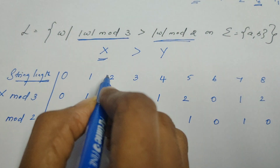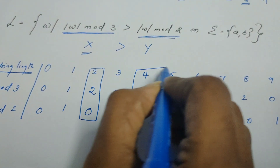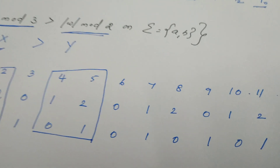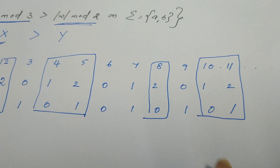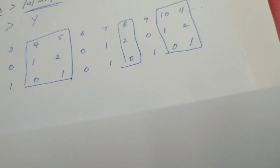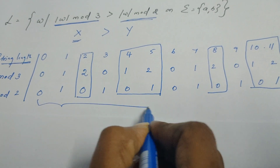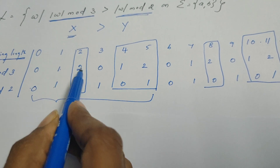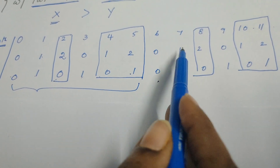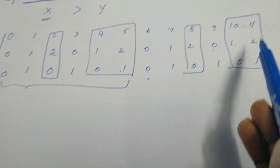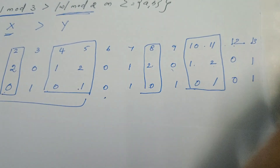Where x is greater than y: string length 2 must be accepted, string lengths 4 and 5 must be accepted, string length 8, and string lengths 10 and 11 must be accepted. Observing the remainder pattern — 0,0 | 1,1 | 2,0 | 0,1 | 1,0 | 2,1 — from string length 6 the same pattern repeats. So the pattern period is 6.